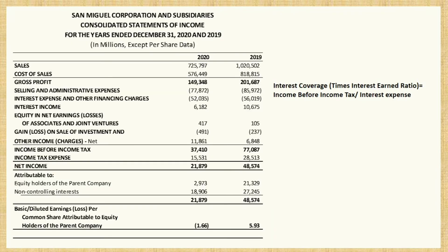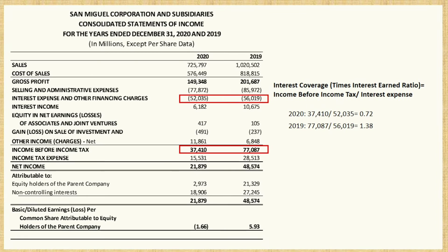Next is the coverage ratio, which from 1.38 has decreased to 0.72, implying that the company is having a harder time or has decreased its ability to easily pay interest on its outstanding debt.